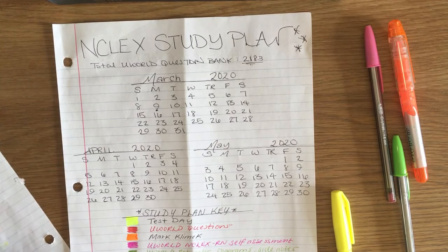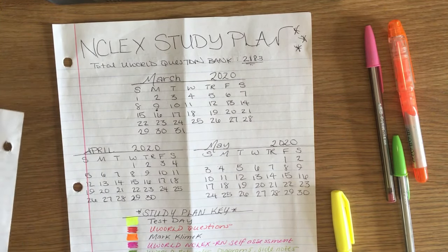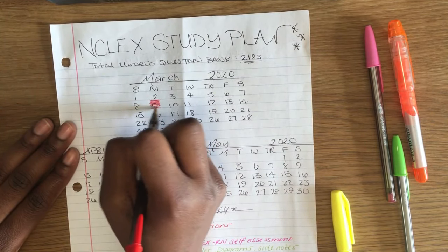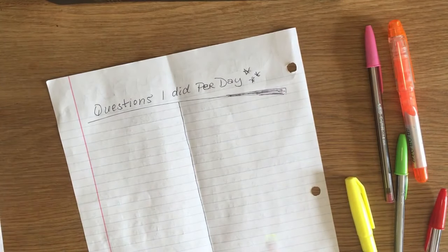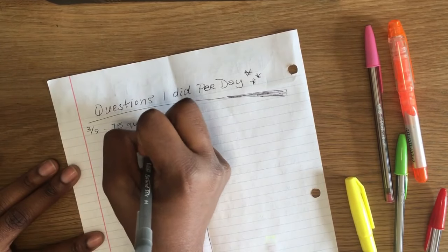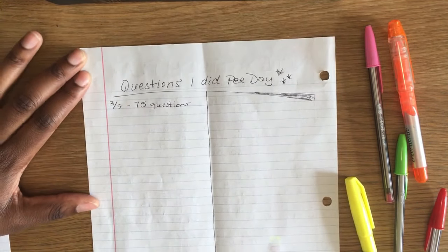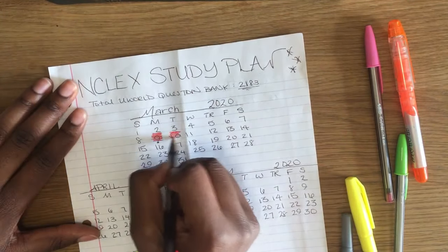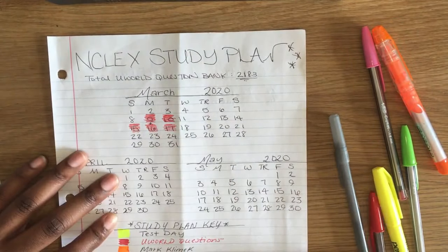So every time you study, you mark the date with a color based off the study plan key. Then on the back, you summarize how you studied by writing the date and what you did. So on the 9th, I used Uworld to study for NCLEX and I did 75 questions. So I marked the 9th red and I wrote on the back 75 questions. Then on the next day, I also used Uworld and I did 50 questions that day. So I wrote that on the back.